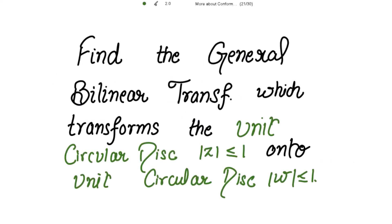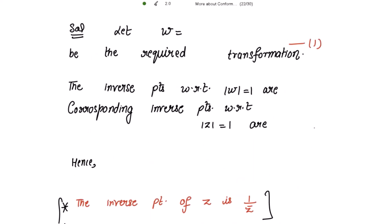We need to find the general bilinear transformation which maps the unit circular disk |z| ≤ 1 onto the unit circular disk |w| ≤ 1. For that, let's take our original transformation w = (az + b)/(cz + d) with the important condition that ad - bc ≠ 0. Let this be the required transformation, marked as equation 1.